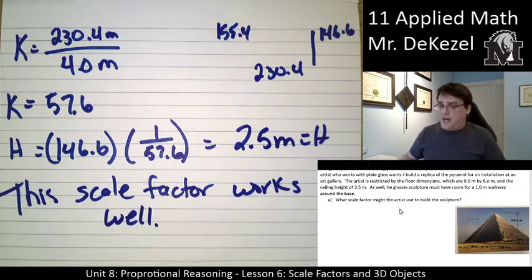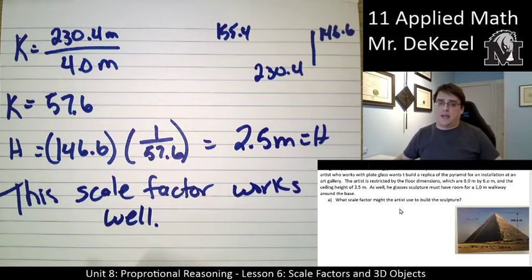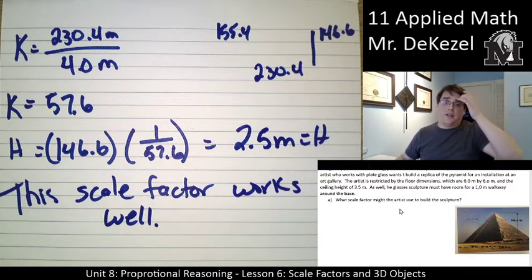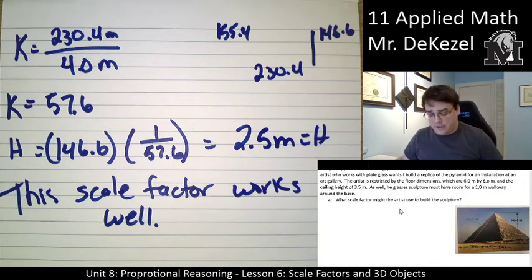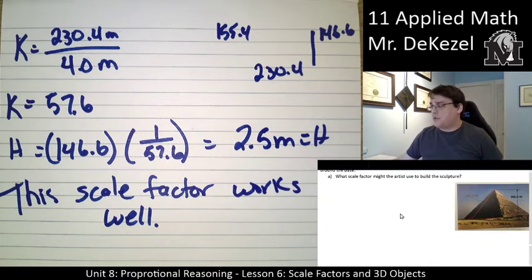It's actually the best. It's got the base as large as it can. It goes as high as it possibly can. So, again, the only way that you'd be able to make this pyramid larger is if you had a larger room, maybe 8 by 8 meters. Then you could make it a little bit taller. But, as far as this goes, this is the best scale factor that you can use when the artist builds the sculpture of the pyramid.